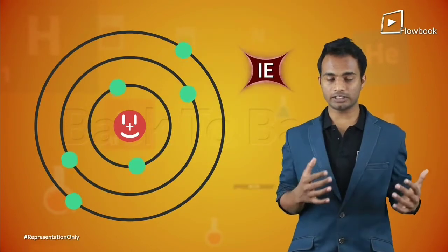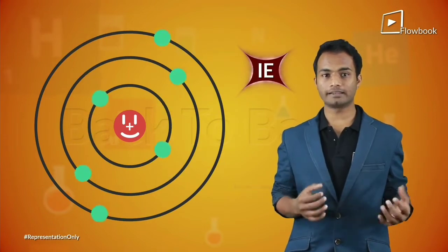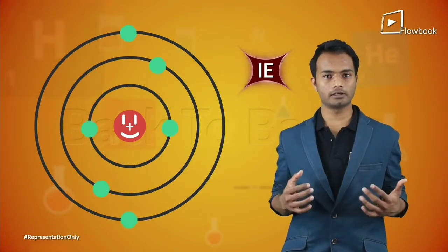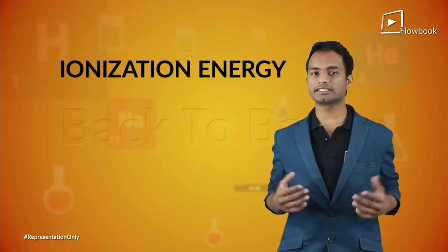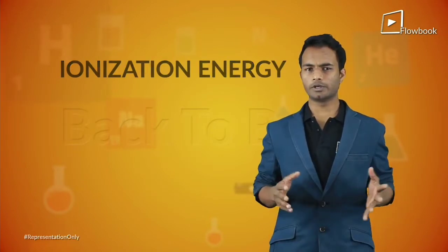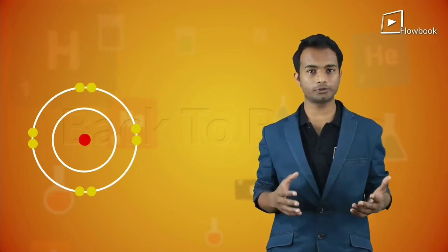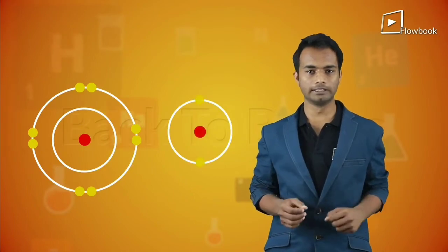This energy needed to remove an electron from an atom to make it an ion is called its ionization energy. You already know that atoms like to be stable, and for them to be stable they need eight electrons in the valence shell, or two if you're helium.